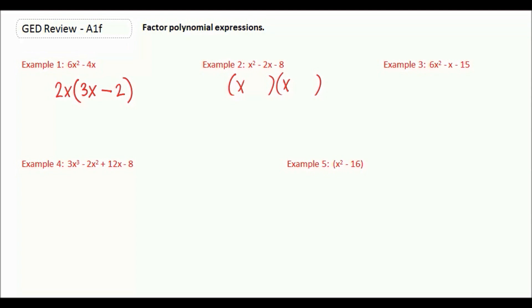But now, we need to find two numbers that are going to multiply to negative 8. But then also add to negative 2. So our options for negative 8 would be 1 and 8. But none of those will work adding to negative 2. But we could also have 2 and 4.